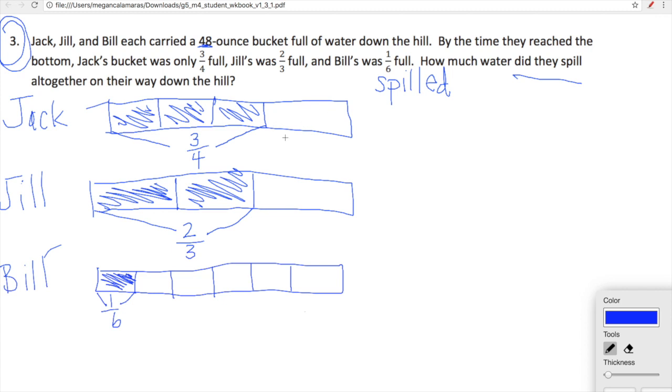Let's set up a quick list of what was spilled. Jack had three-fourths left, so he spilled one-fourth. Jill had two-thirds left in her bucket, so she spilled one-third on the way down the hill. And then Bill only had one-sixth left in his bucket, which means that he spilled five-sixths of his bucket on the way down the hill. So one-fourth, one-third, and five-sixths of what? Each of them was carrying 48 ounces. So Jack spilled one-fourth of 48, Jill spilled one-third of 48, Bill spilled five-sixths of 48.